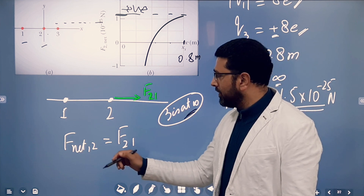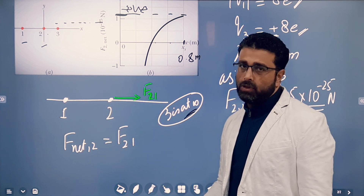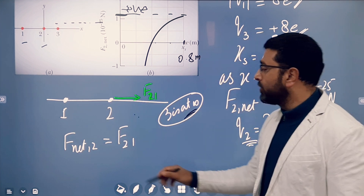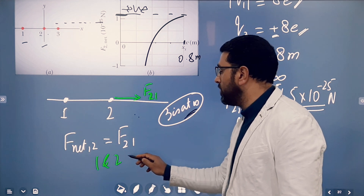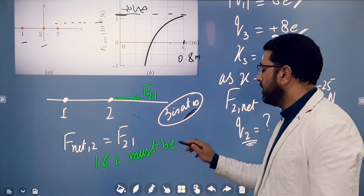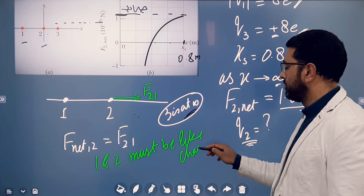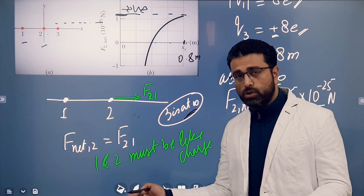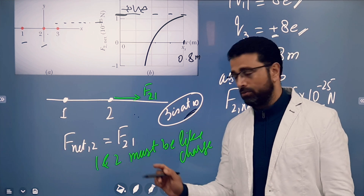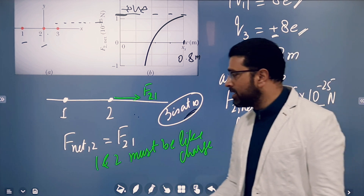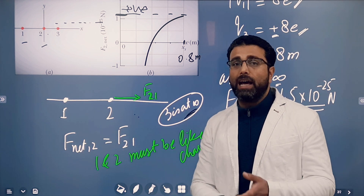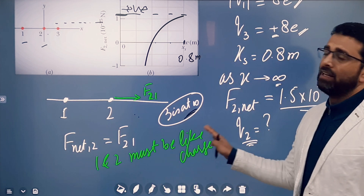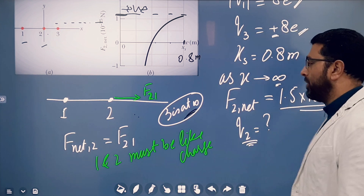Clearly, particle 1 is repelling particle 2 — the force on 2 from 1 is directed away from 1. If 1 is repelling 2, then 1 and 2 must be like charges. They must have the same sign. We don't know if both are positive or both are negative — we just know they are like charges.